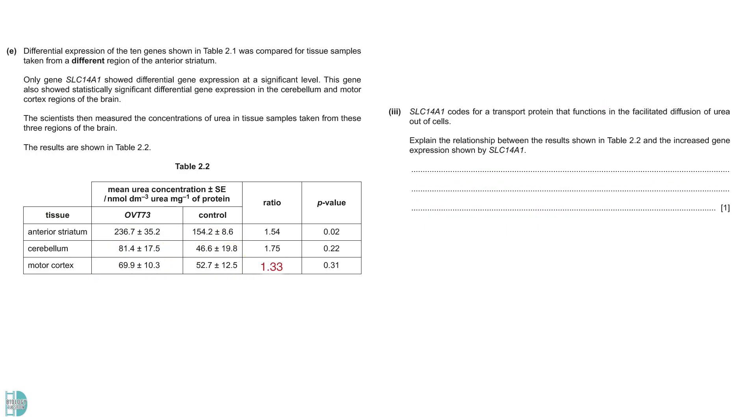Part 3 tells us the role of SLC14A1. Explain the relationship between the results shown in table 2.2 and the increased gene expression shown by SLC14A1. There is more urea in those cells, so more transport proteins will synthesize for more removal of urea.